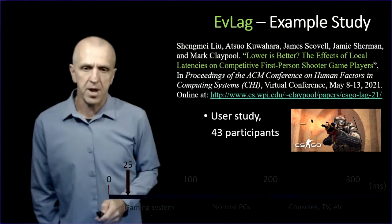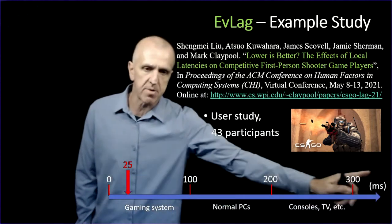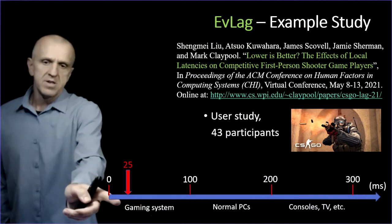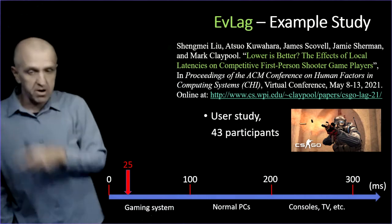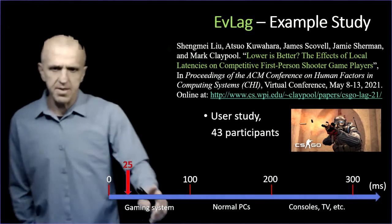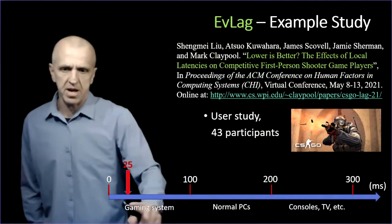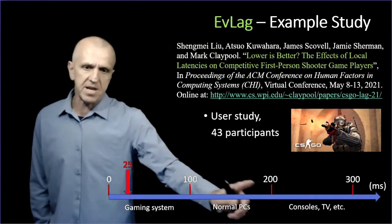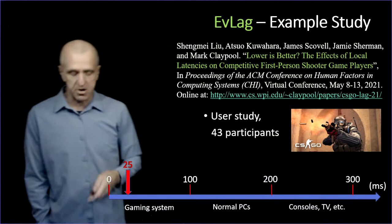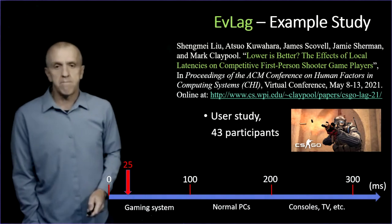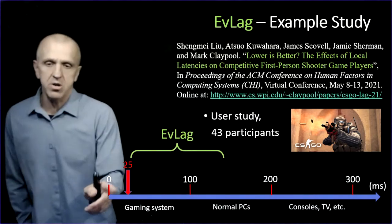We had 43 people play it. This is the range of possible latencies in the system you might see. Gaming systems down on this end, at 25 milliseconds that's decent latency for a gaming system. They might range further than that. Normal PCs can go into the hundreds. Actually, consoles and TVs with the game engine can be even in the 200s, they can be really high.